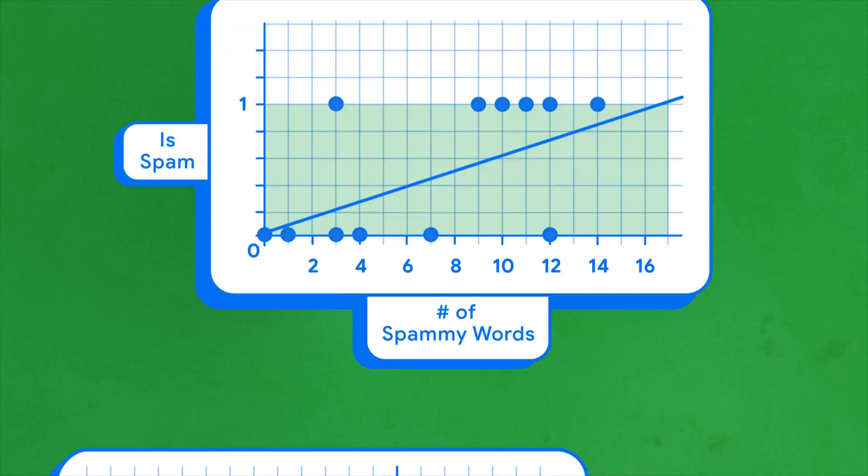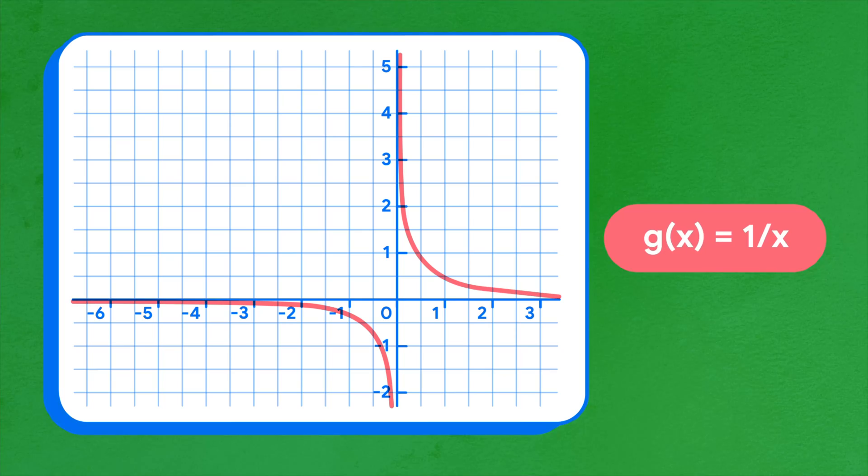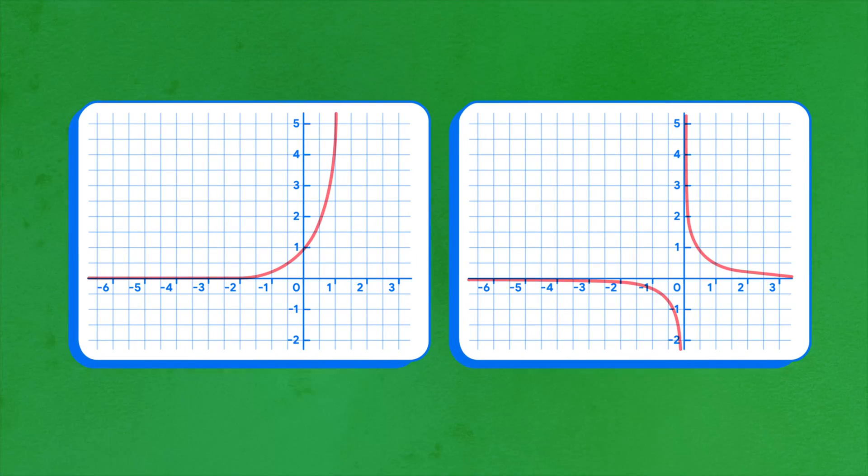Two curves that may come to mind are an exponential curve and a hyperbola. Both functions produce outputs that approach a limit in at least one direction, but neither function's range is constrained to values between 0 and 1.